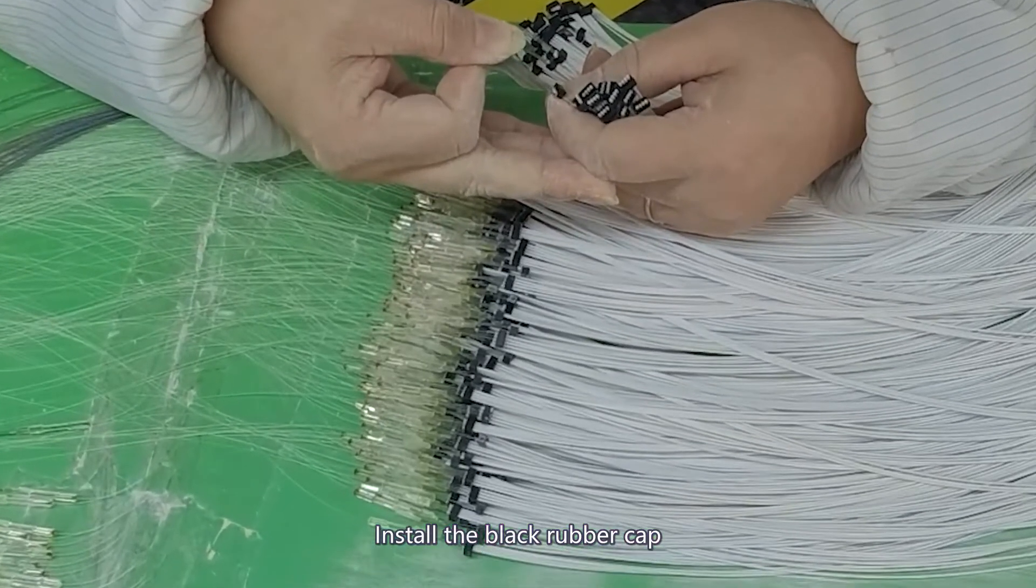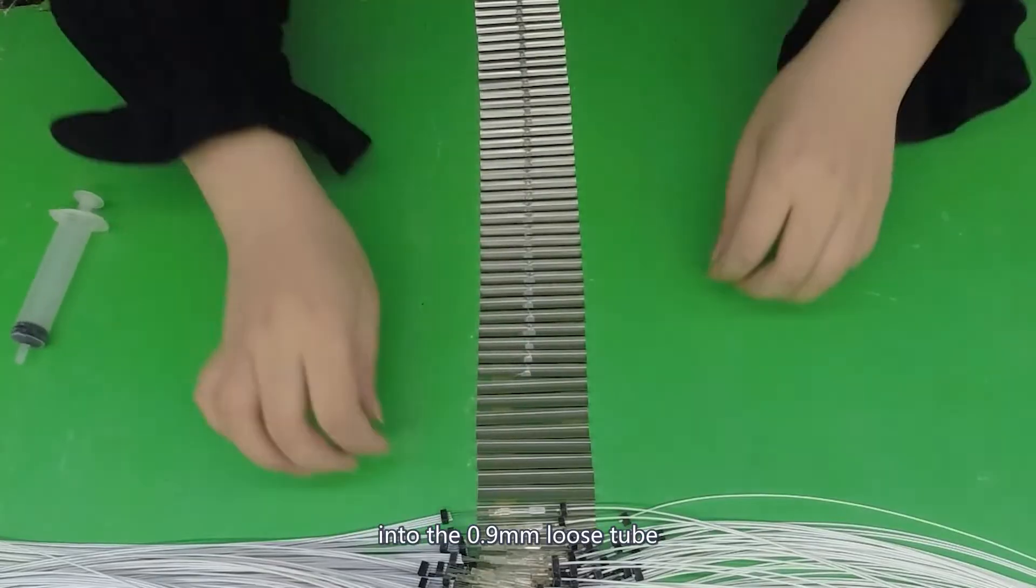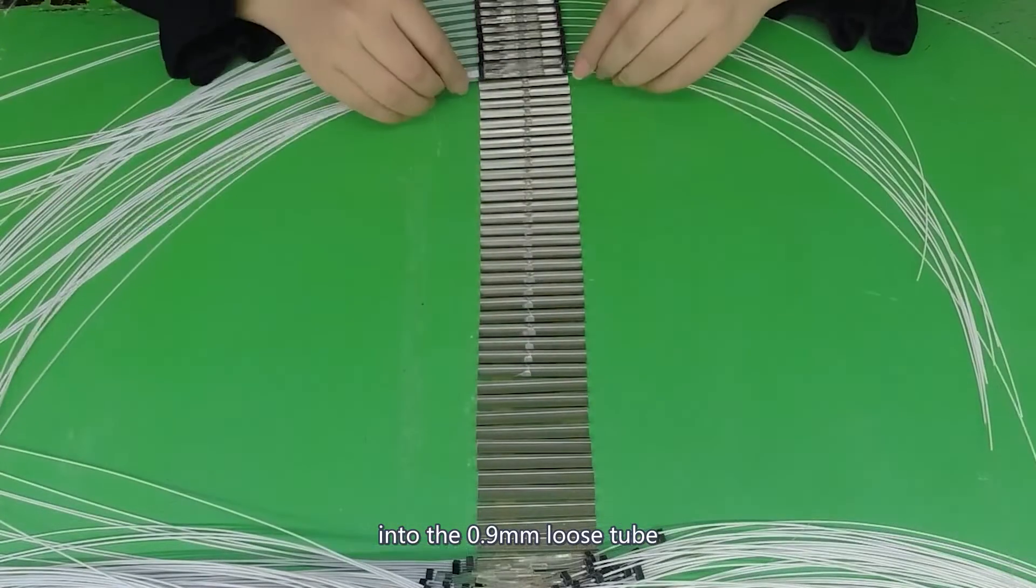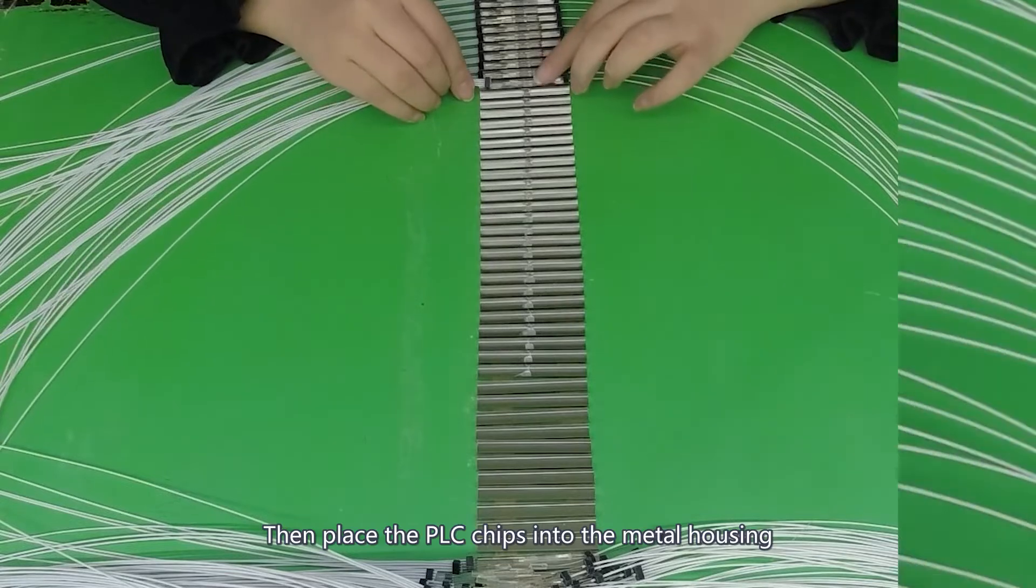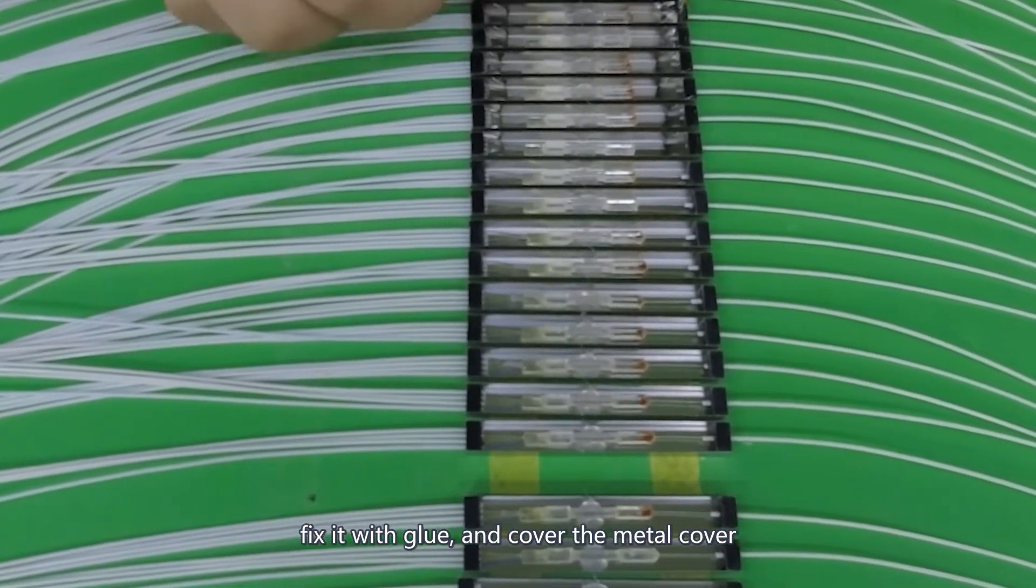Install the black rubber cap. Carefully insert the bare optical fiber into the 0.9 mm loose tube, then place the PLC chips into the metal housing. Fix it with glue and cover the metal cover.